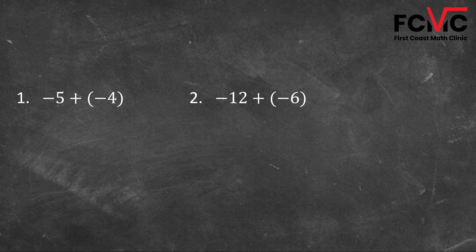For examples 1 and 2, we notice we have two values that are the same sign — a negative plus a negative and a negative plus a negative. So let's come up with our rules for when we add two negative values. First, let's look at this on a number line for example 1.